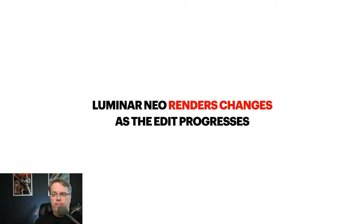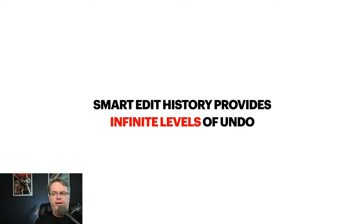There are pros and cons to each method. Luminar Neo renders changes as the edit progresses, but it also has a smart edit history that provides unlimited levels of undo. Basically what they've created with this new engine is a hybrid model combining sequential editing and parametric rendering, trying to make things faster on both ends while also giving you infinite levels of undo. That's why they have a new engine.